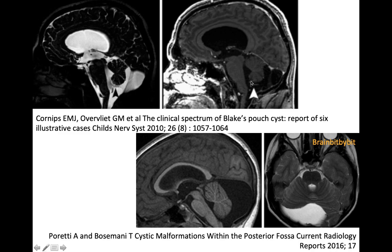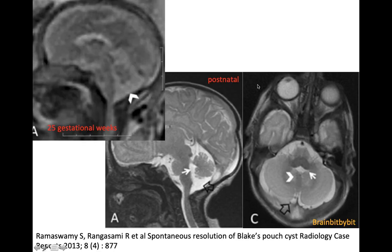You can also look at the choroid plexus, because in Blake's Pouch Cyst the choroid plexus continues into the cystic malformation. To conclude, I want to show a very nice case report from 2013 where a Blake's Pouch Cyst was diagnosed at 25 gestational weeks with a cyst in the posterior fossa and an increased tegmento-vermian angle but no hypoplasia of the vermis. On the postnatal MRI the Blake's Pouch Cyst had resolved, indicating delayed perforation of the roof of Blake's pouch. One of the postulated mechanisms of mega cisterna magna is a delayed perforation of Blake's Pouch Cyst. Thanks for watching, and until next time when we will continue in the posterior fossa with the Chiari malformations.